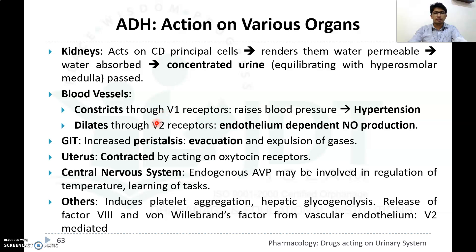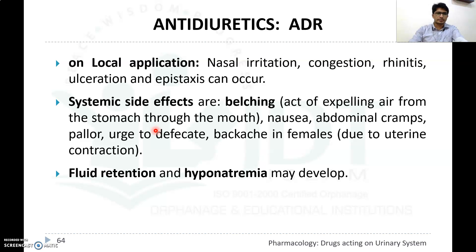In the GI tract, ADH increases peristalsis, leading to evacuation and expulsion of gases. In the uterus, ADH causes contraction by acting on oxytocin receptors. In the CNS, ADH may be involved in temperature regulation and learning. Other functions include induction of platelet aggregation, hepatic glycogenolysis, and release of factor VIII and von Willebrand factor from vascular endothelial cells via V2-mediated response.